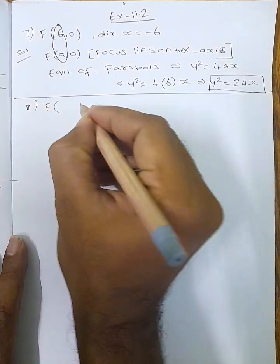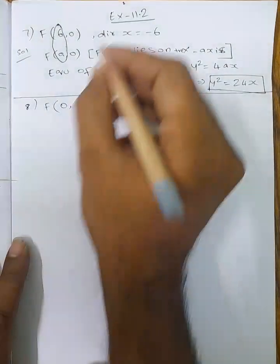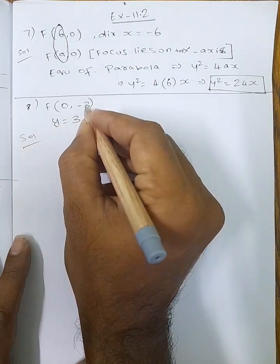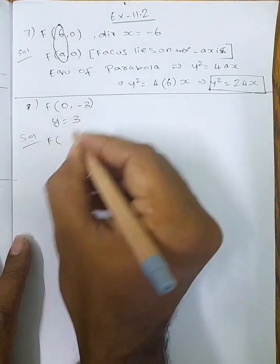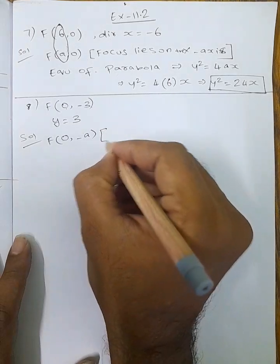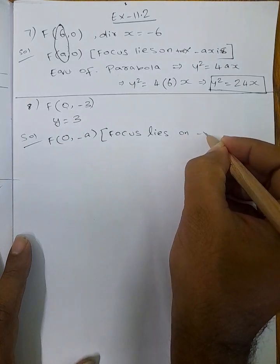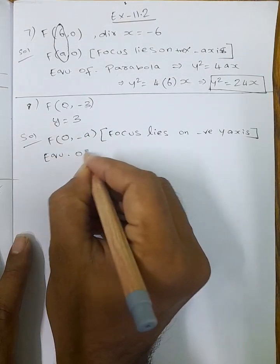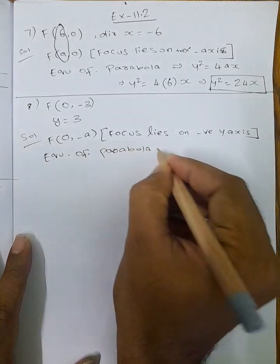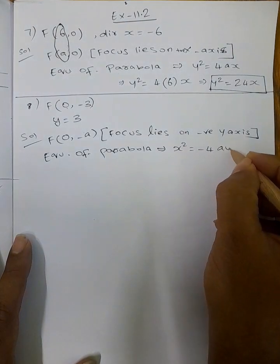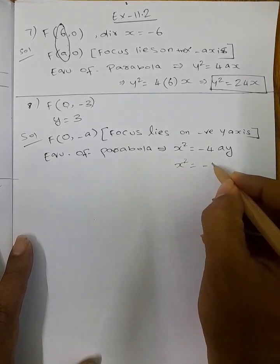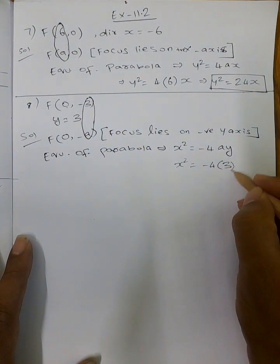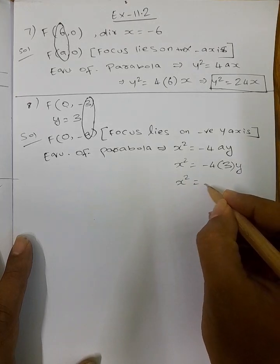Next question: focus is at (0, -3) and directrix is y = 3. So focus lies on negative y-axis. Compare with formula (0, -a), so a = 3. Equation of parabola for focus on negative y-axis: x² = -4ay. Therefore x² = -4 × 3, so x² = -12y.